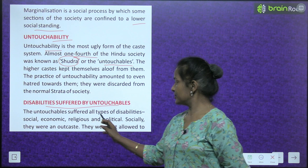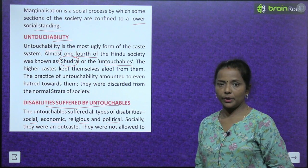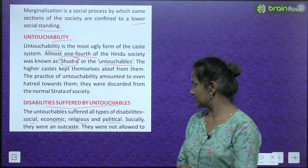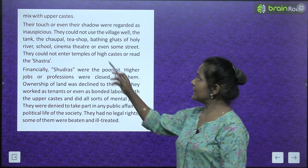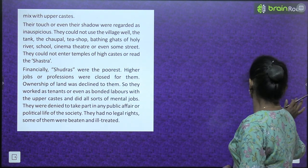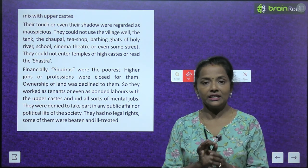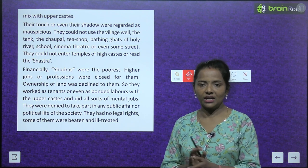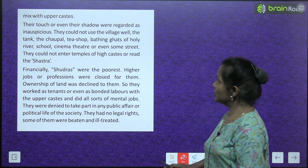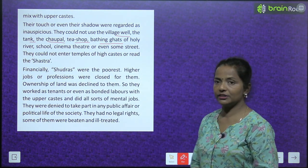The untouchables suffered all types of disabilities: social, economic, religious and political. Socially, they were an outcast. They were not allowed to mix with the upper caste. Their touch or even their shadow was regarded as inauspicious. They could not use the village well, the tank, the chopal, tea shop, bathing huts of holy river, school, cinema theatre, or even some streets.